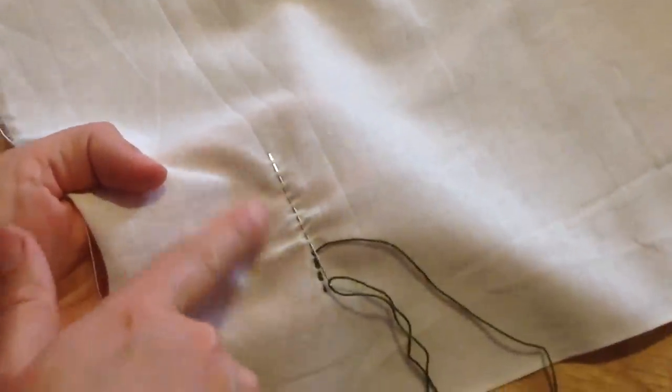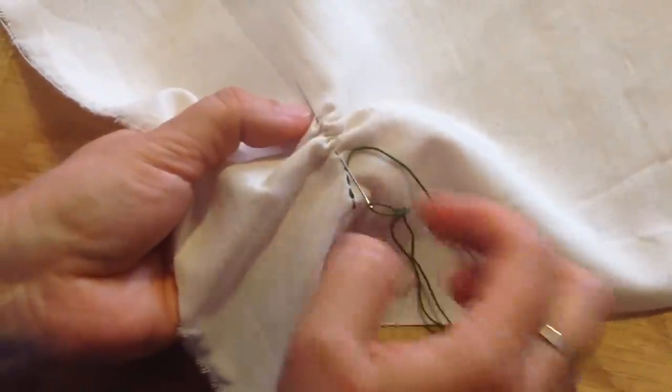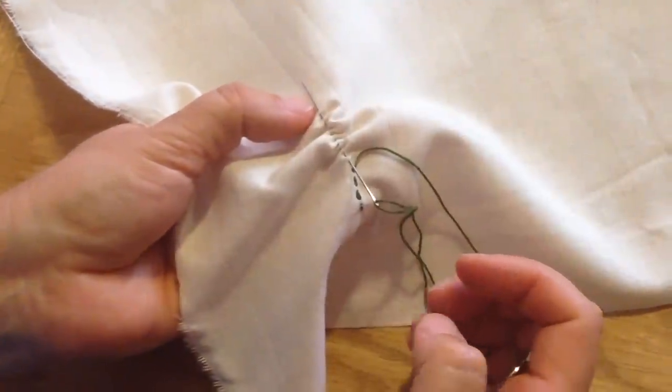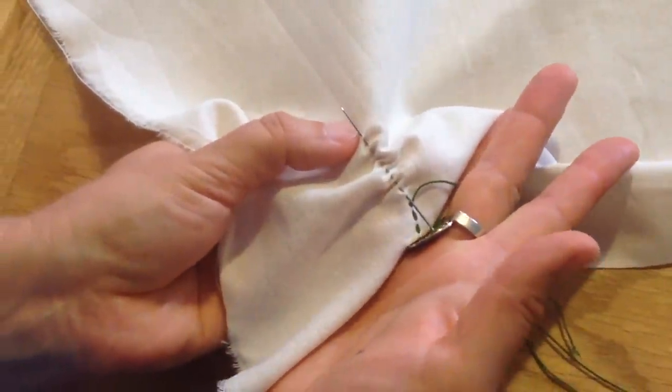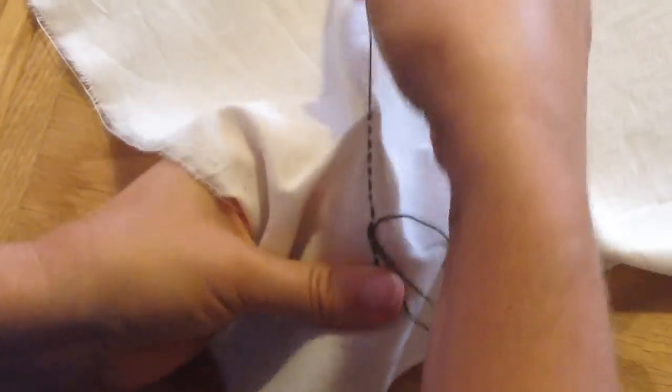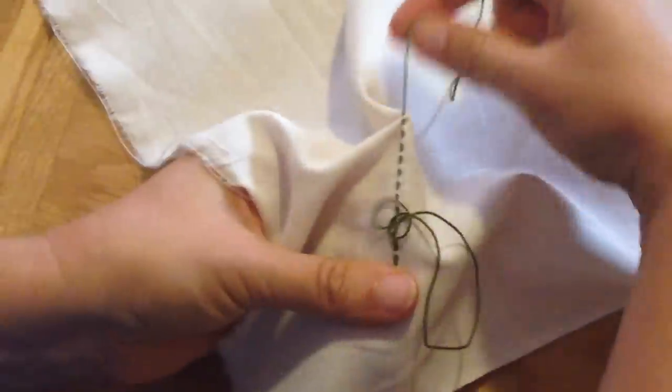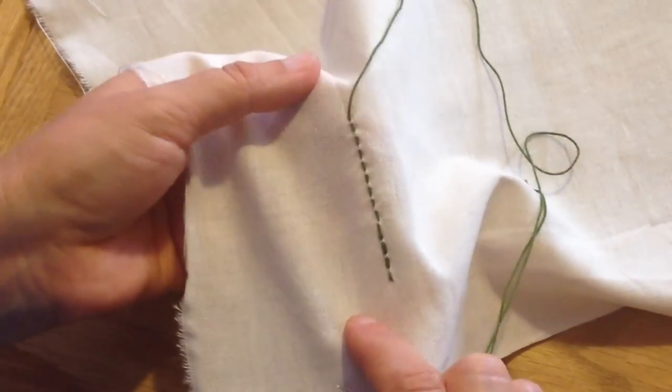So here we have stitches stacked on the needle. It compresses, it takes up a lot less space if you want to just cram them on there. So I'm going to take my thimble again and just push it right through. If you're using more than a single layer of fabric, that thimble comes in real handy.